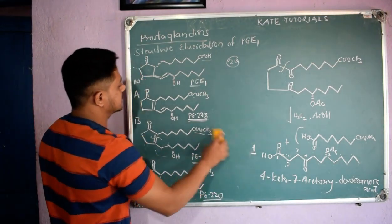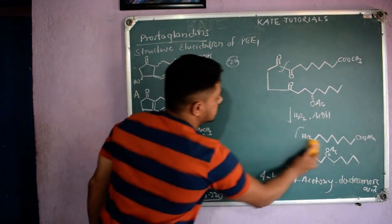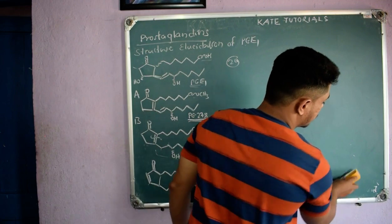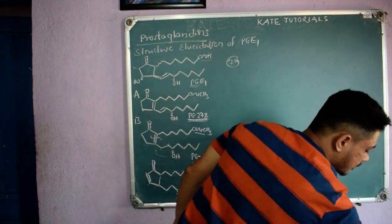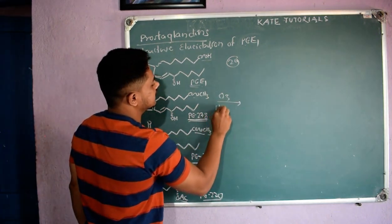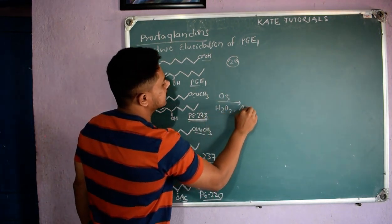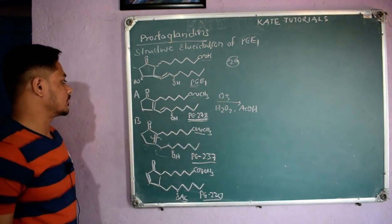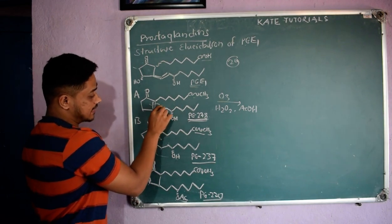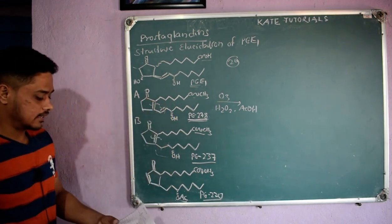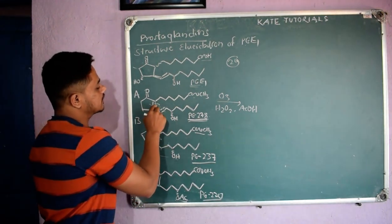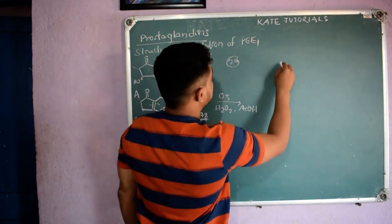Similarly, we shall do ozonolysis with PG278. Both components are different so different products will be obtained. For PG278, I will do ozonolysis with oxidizing agent H₂O₂ in acetic acid solution. Here there is one pi bond, and there is another pi bond — so there is a chance to break both bonds.